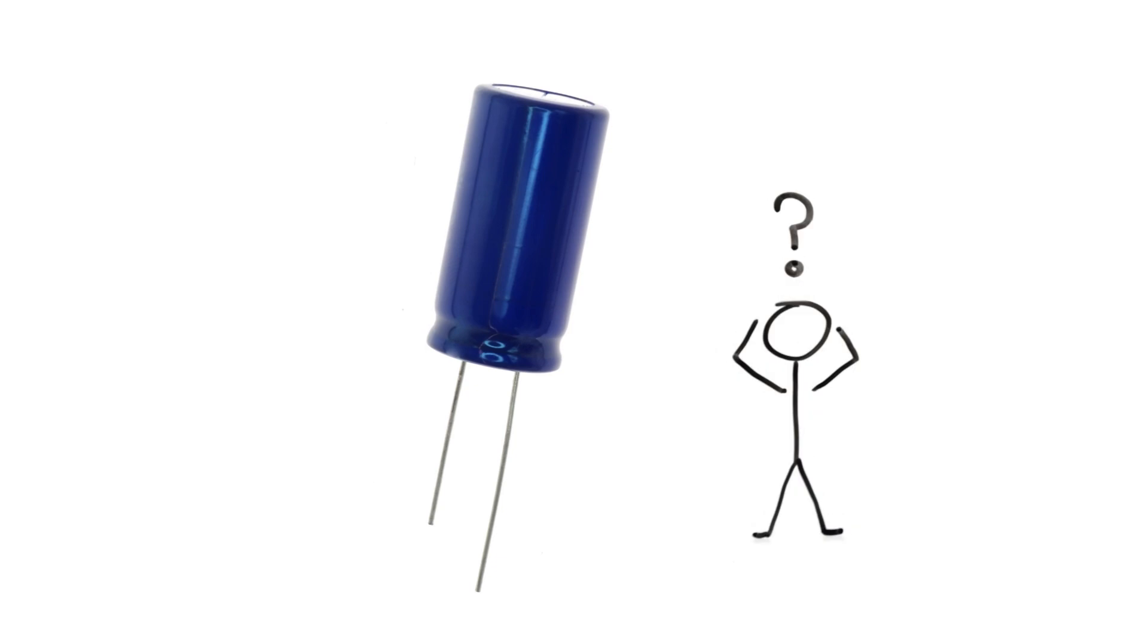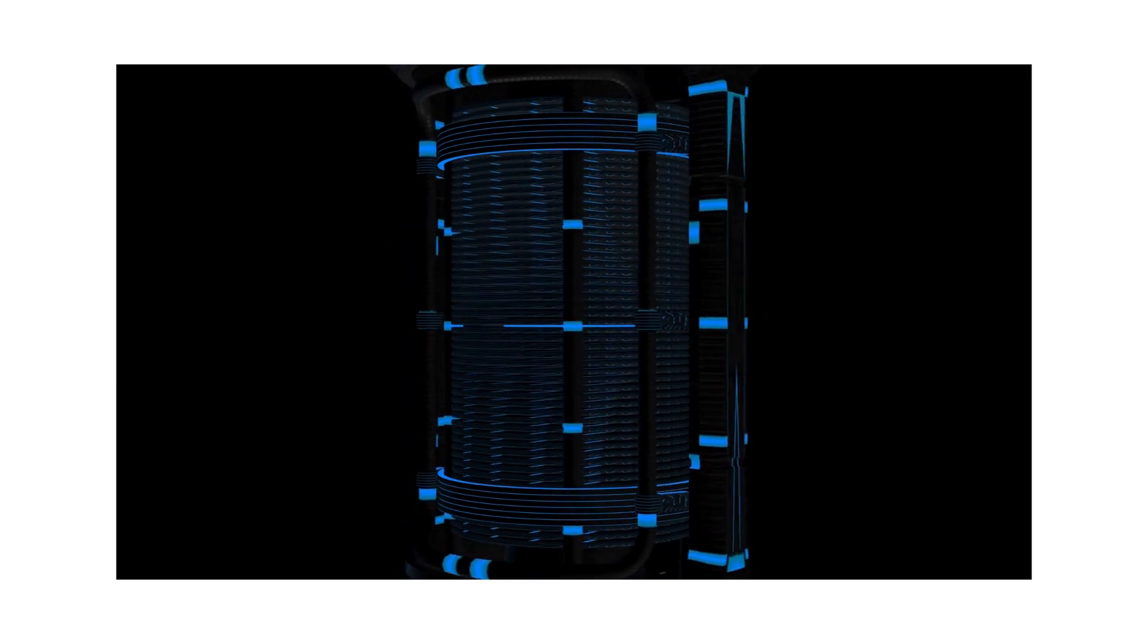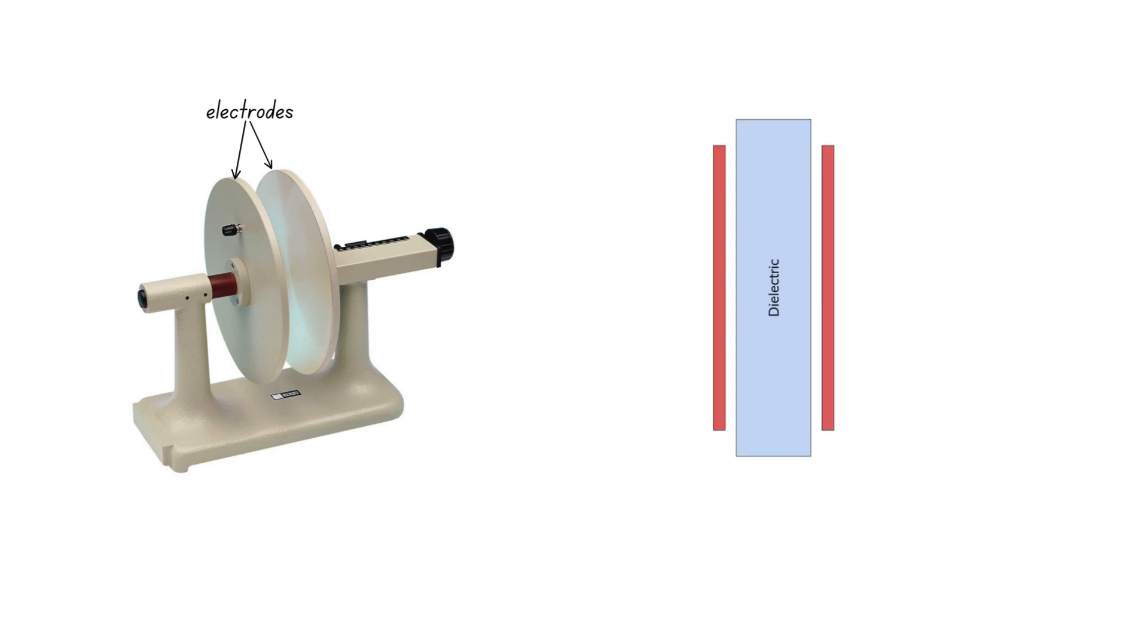So, what is a capacitor? Simply put, a capacitor is a device that stores energy in the form of an electric field. It consists of two conductive plates called electrodes, separated by an insulating material called a dielectric. Examples of this material include ceramic, glass, and air.